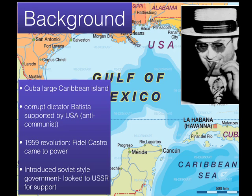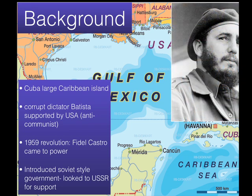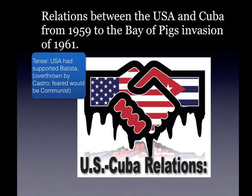The background of the crisis: Cuba, a large Caribbean island only 90 miles away from the United States, was ruled by a corrupt dictator in 1959 called Fulgencio Batista. He was corrupt, authoritarian, rather unpopular, but he was supported by the USA because he was anti-communist. However, in 1959 there was a revolution and Fidel Castro came to power, gradually introducing a Soviet-style government and looking towards the USSR for support. Relations between the USA and Cuba were tense — cold and frosty — but without any direct military confrontation.